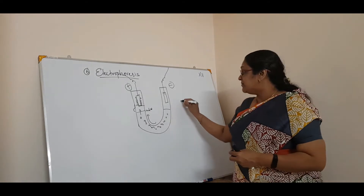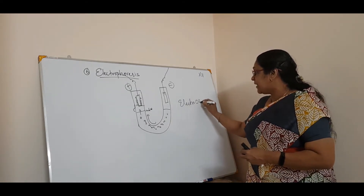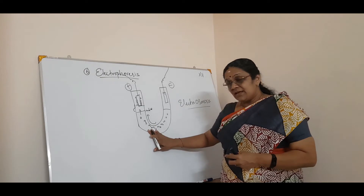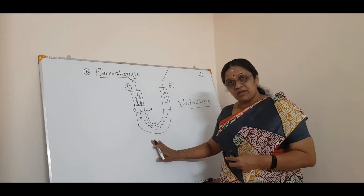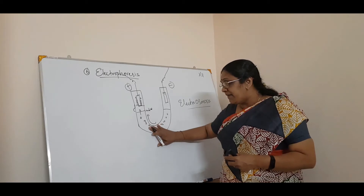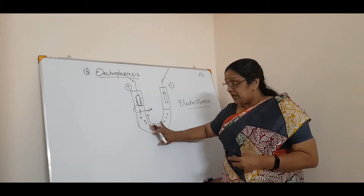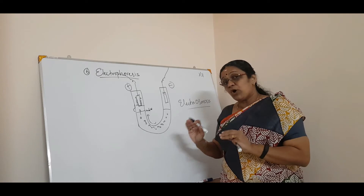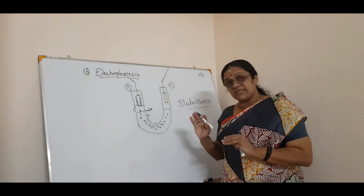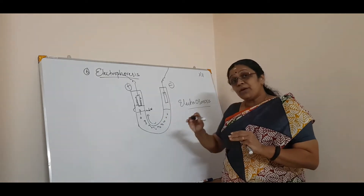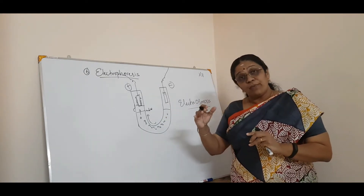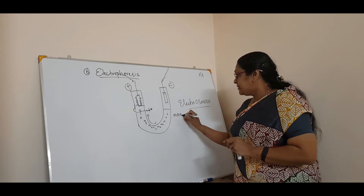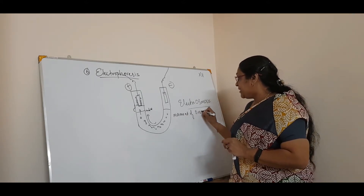There is one more term called electroosmosis. In electrophoresis, the colloidal particles are moving. If you want to prevent the movement of colloidal particles by any method and electrical voltage is applied, then the dispersion medium starts to move. The movement of the dispersion medium is called electroosmosis.